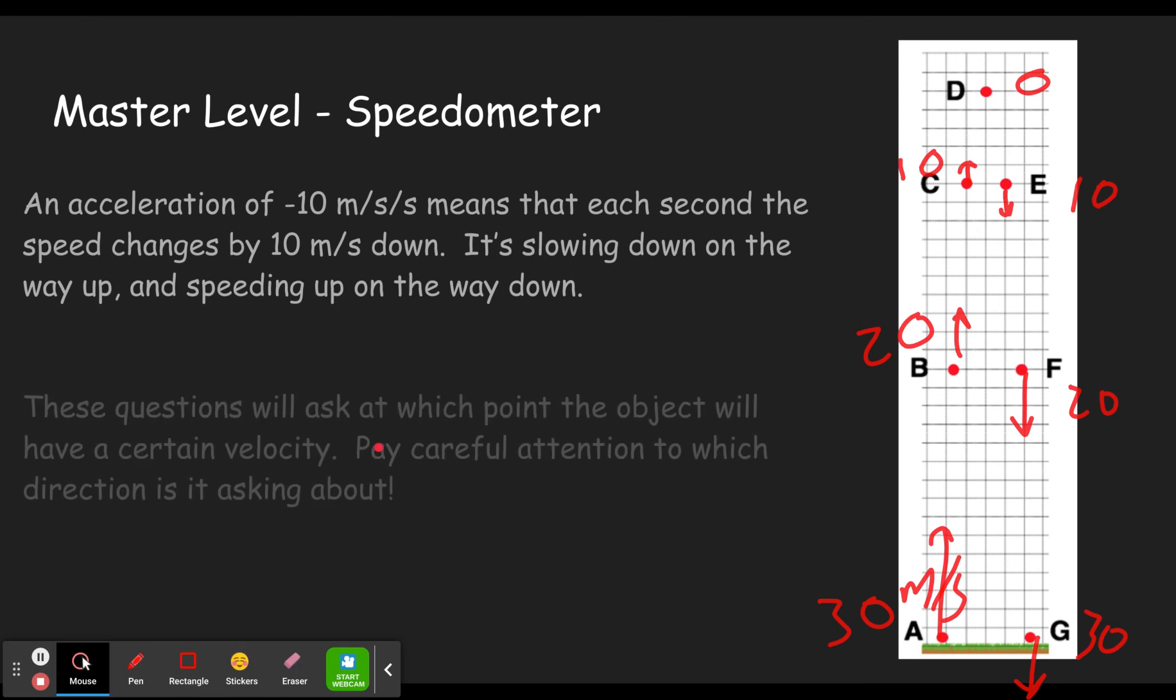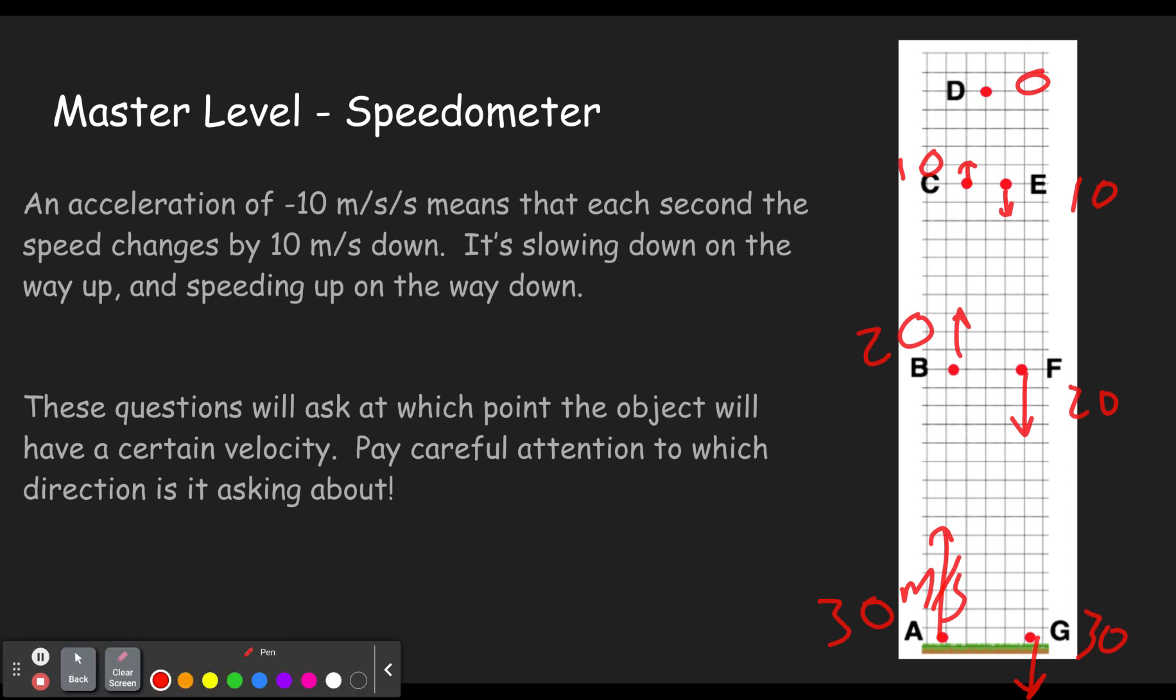And these questions, what they'll do is they'll ask at which point the object will have a certain velocity. So they'll tell you that it starts out at 30 and they'll say, at which point does it have a velocity of 20 meters per second down? Well, that is where it has 20 meters per second down. So you'd choose F. The one thing you have to be careful of is sometimes it'll ask you for 20 meters per second down and sometimes it'll ask you for 20 meters per second up.